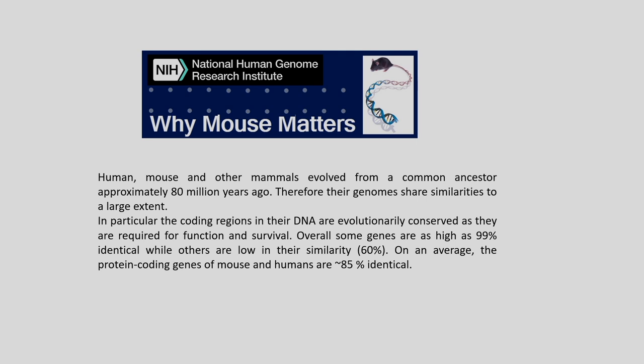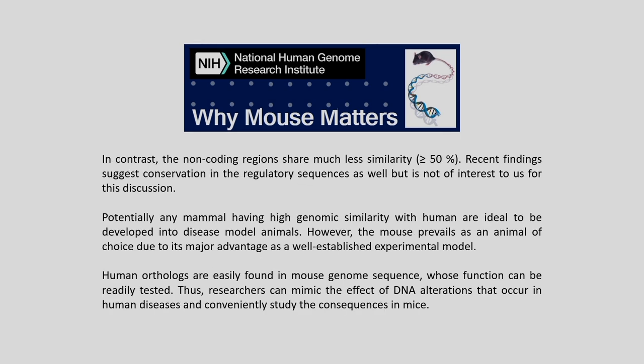We know that humans, mice and other mammals have evolved from a common ancestor roughly 80 million years ago, and therefore their genomes share similarities to a large extent. In particular, the coding regions in the DNA are evolutionarily conserved, as they are required for function and survival. Overall, some genes are as high as 99 percent identical while others are low in similarity. On average, the protein coding genes of mouse and humans are around 85 percent identical. In contrast, non-coding regions share much less similarity — less than 50 percent.